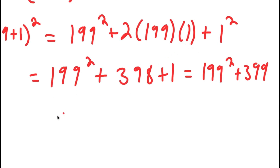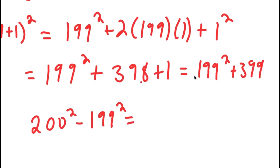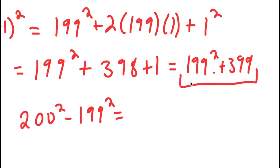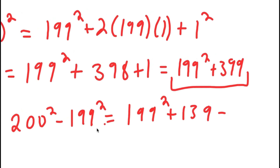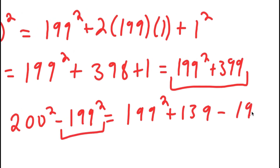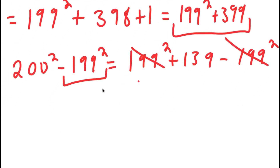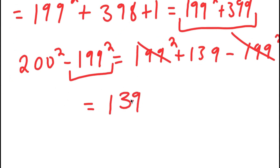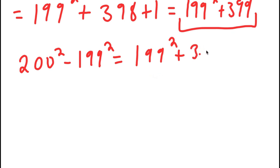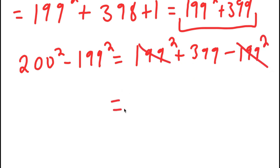So this means that 200 squared minus 199 squared is equal to — well, this right here is 200 squared — so 199 squared plus 399, minus 199 squared. The 199 squared and negative 199 squared cancel out, and all I'm left with is 399. So 399 is my answer.